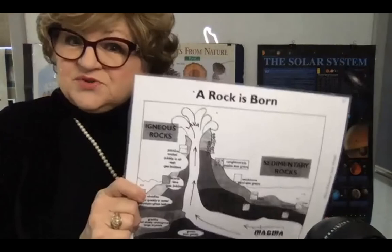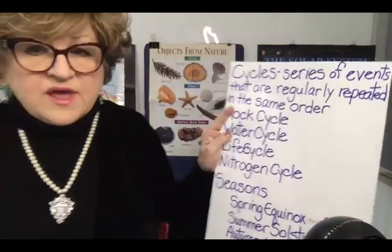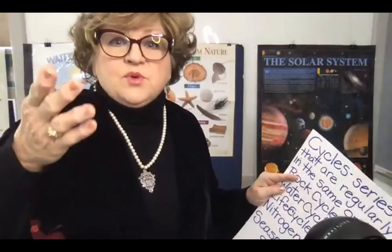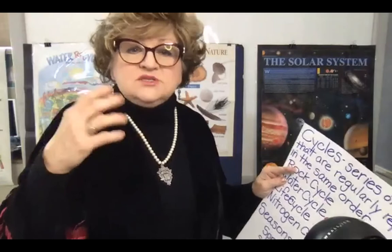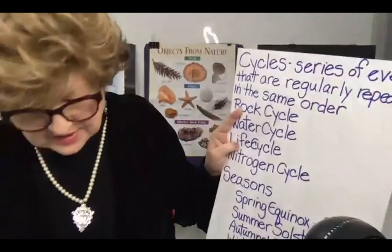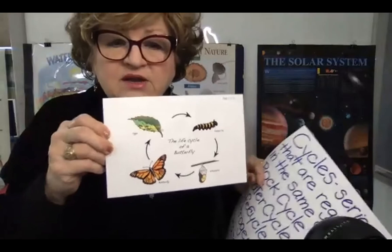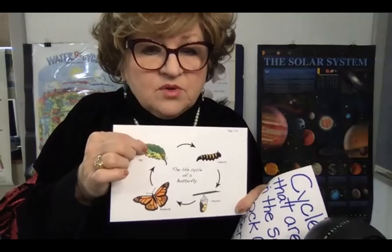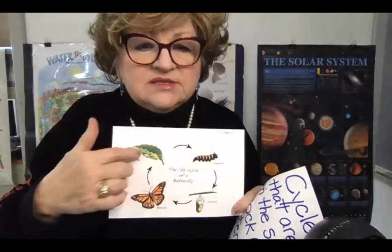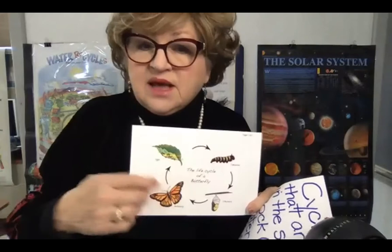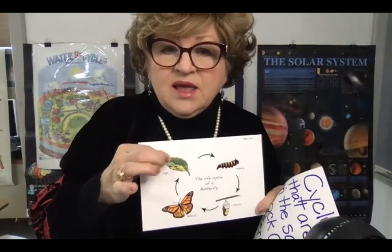Another cycle is the water cycle, which you've been learning since kindergarten — evaporation, condensation, precipitation, and transpiration. There's also the life cycle, like the monarch butterfly: the egg hatches on a milkweed leaf, the caterpillar eats the leaf, forms a pupa in a chrysalis, the adult comes out and lays eggs — one big cycle fueled by energy from the sun and photosynthesis by green plants.